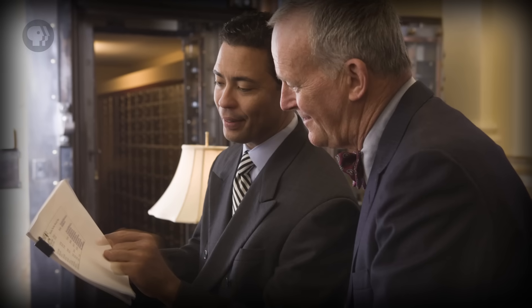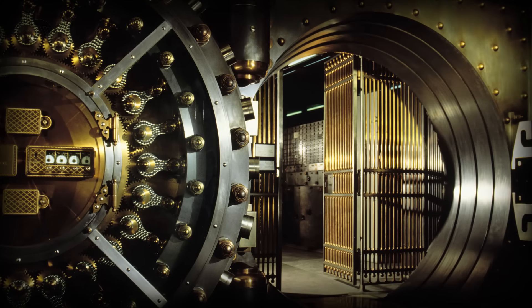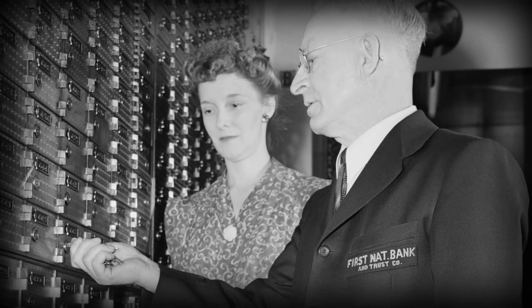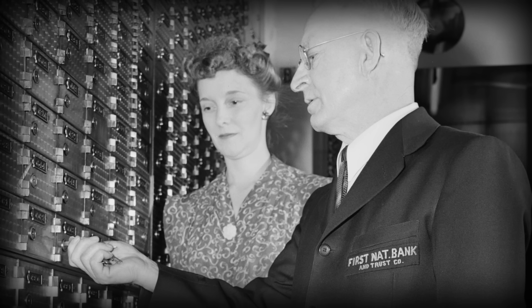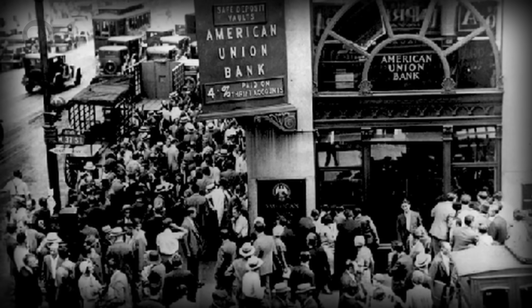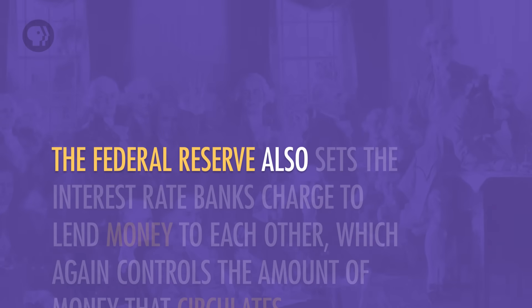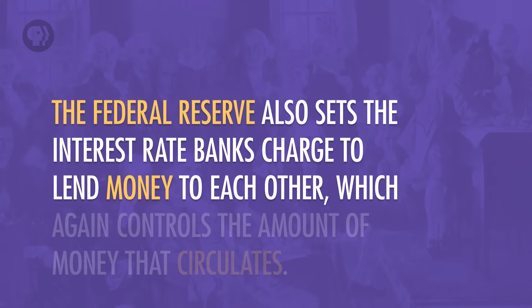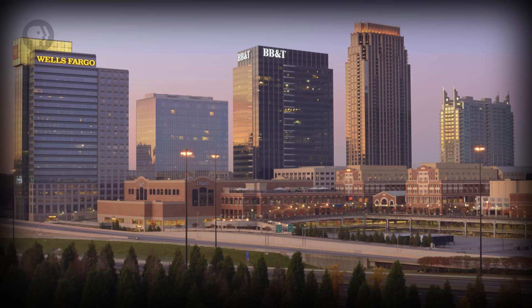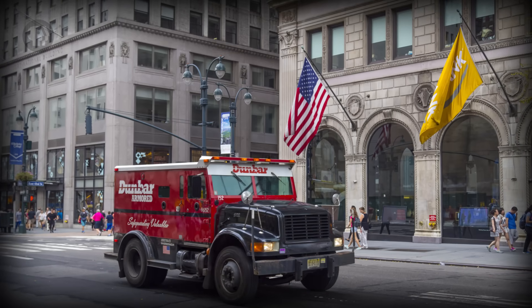The Fed also creates regulations that control how much money circulates in the economy. One of these is the bank reserve requirement, or the amount of money in cash that a bank has to have on hand. The amount of money that a bank holds in reserve is only a fraction of the total amount of money held in deposit at the bank — that's why it's called fractional reserve banking. The reserve requirement is there so that you don't get catastrophic bank runs like we saw during the Great Depression, when so many frightened depositors took their money out of the banks that the banks failed. Raising the reserve requirement reduces the amount of money in circulation, and lowering it pumps more money into the economy. The Federal Reserve also sets the interest rate banks charge to lend money to each other, which again controls the amount of money that circulates. If banks are charging each other a lot to borrow, they won't borrow as much, and they won't lend as much to firms and individuals, and there will be less money in the economy as a whole.